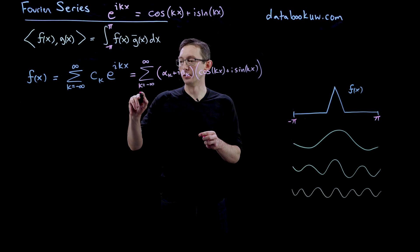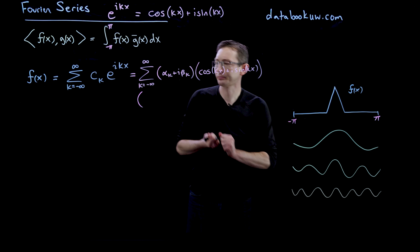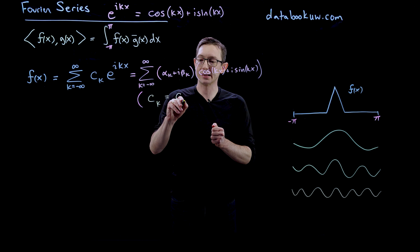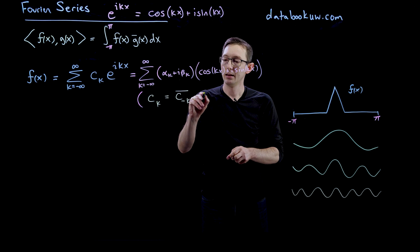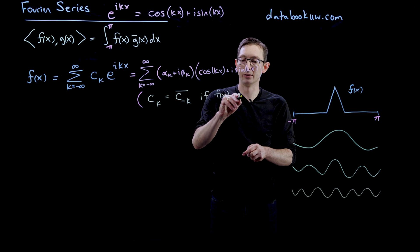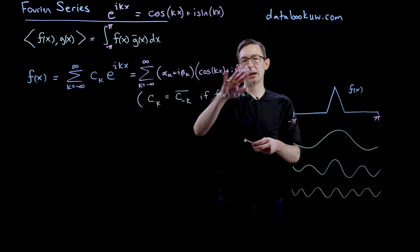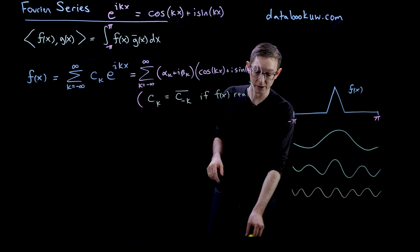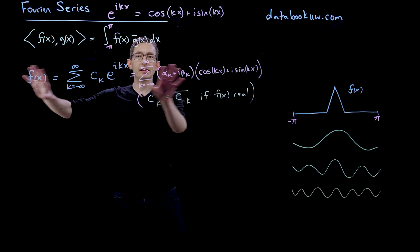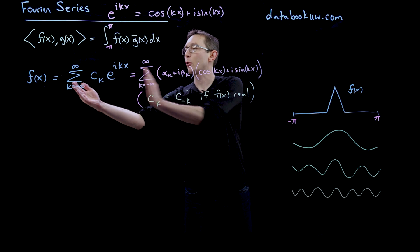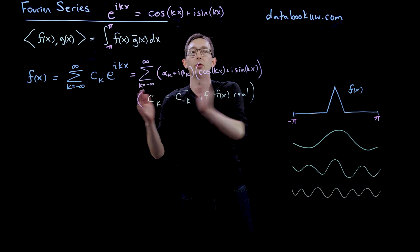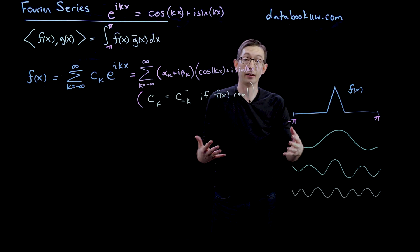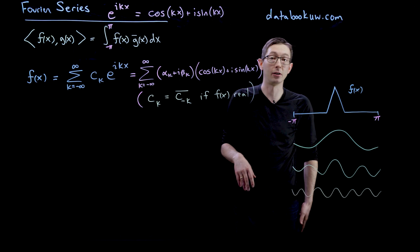If f of x is real, you can derive that there are constraints on these coefficients: c_k equals the complex conjugate of c_{-k} if f of x is real. You can expand this out and kill all the imaginary terms to arrive at that relationship. This complex form is a more compact representation of the Fourier series than before, and it expresses both complex and real functions, making it more general.